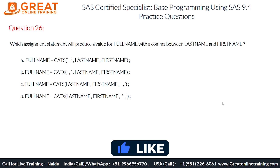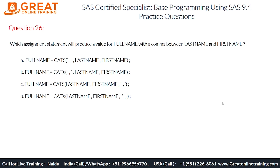In this question, we are given four options, each using different concatenation functions — that is the CATS and CATX functions. The goal is to choose the option that correctly creates the full name string with a comma between the last name and first name.